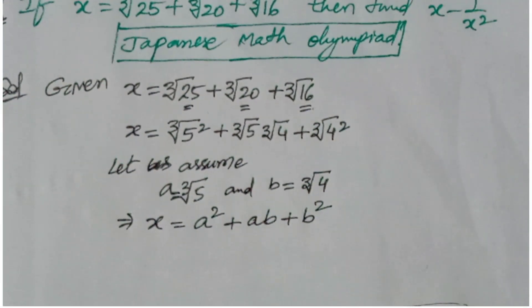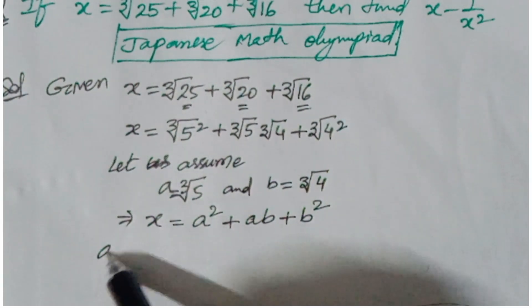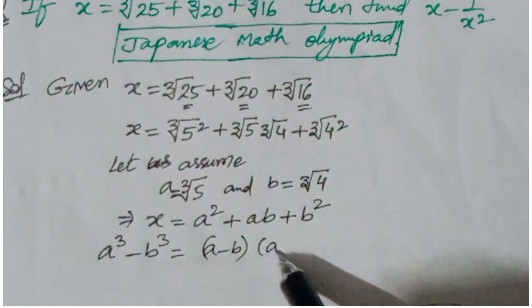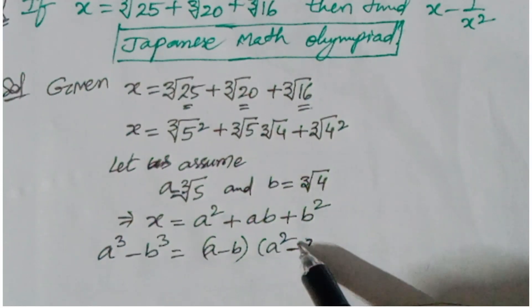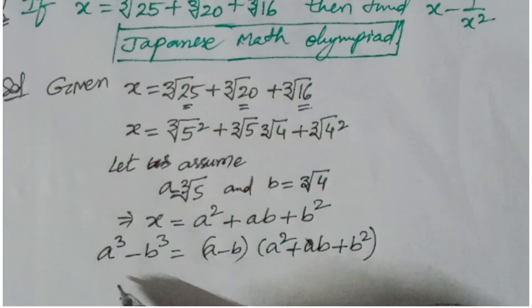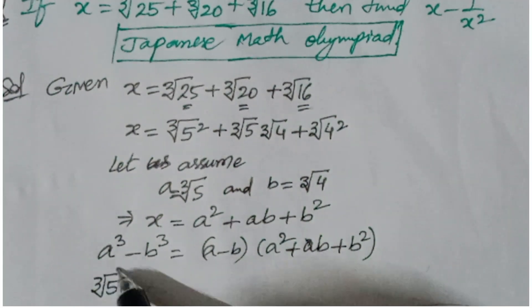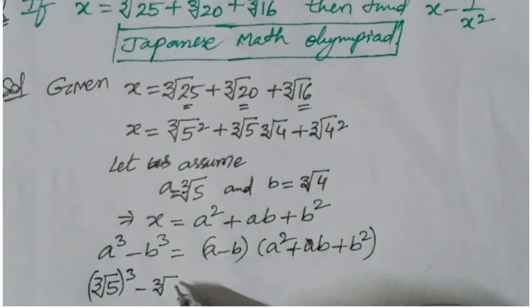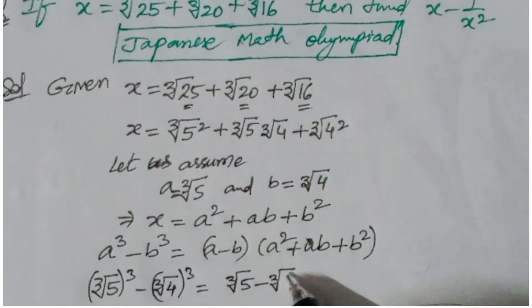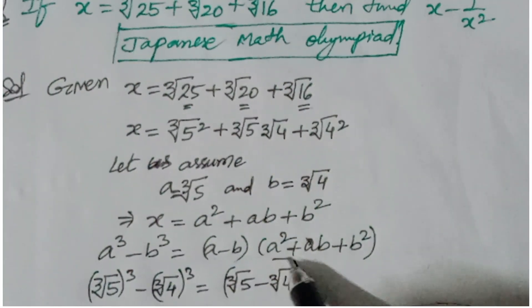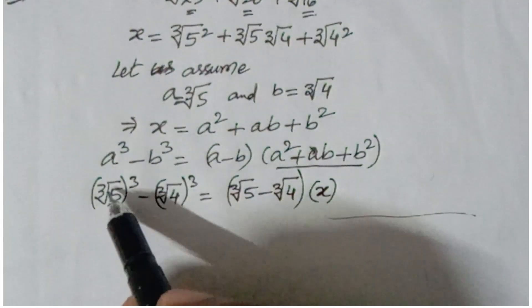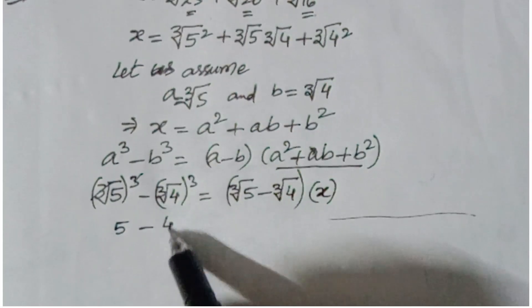Now we get the key idea. We apply the difference of two cubes formula: a³ minus b³ equals (a minus b) times (a² plus ab plus b²). Substituting, cube root of 5 cubed minus cube root of 4 cubed equals (cube root of 5 minus cube root of 4) times x. The cubes and cube roots cancel on the left, giving 5 minus 4, so we get 1 equals (∛5 minus ∛4) times x.